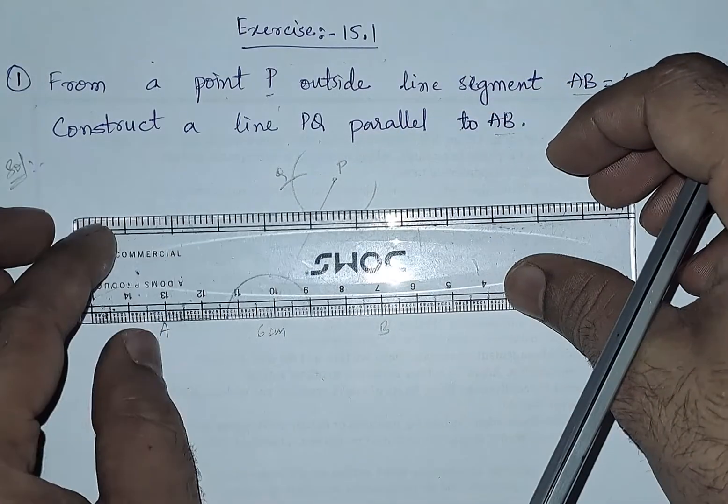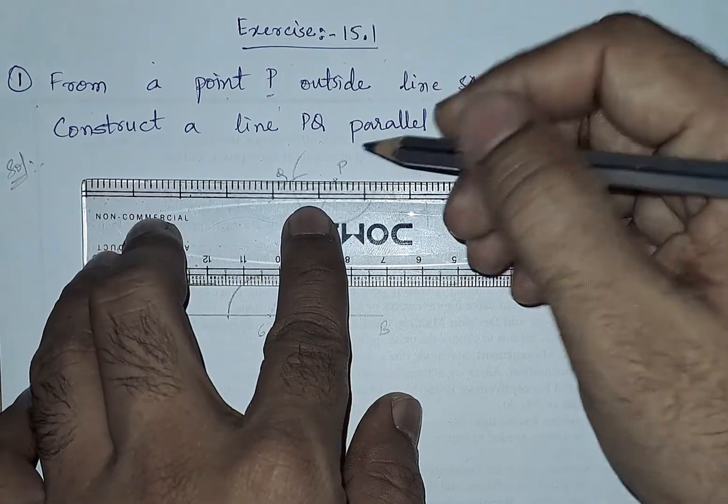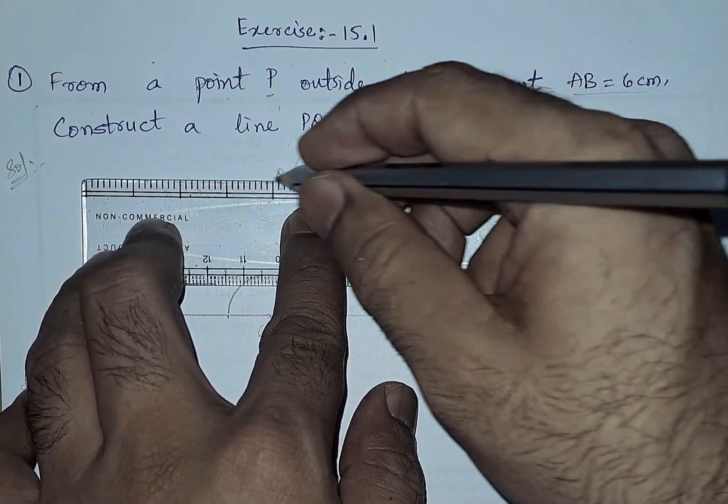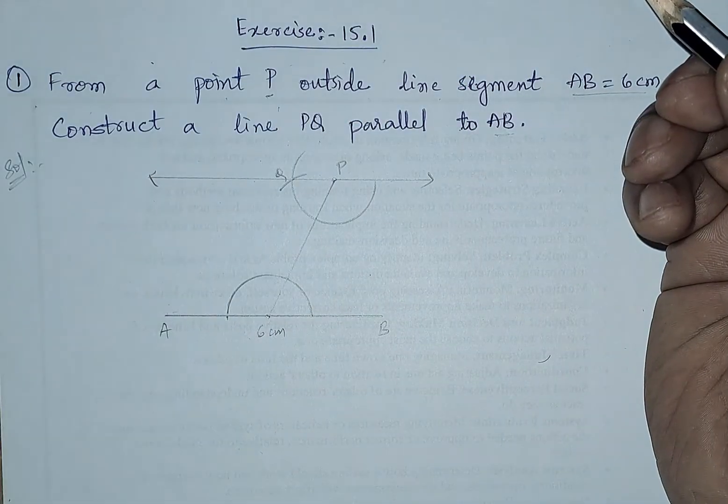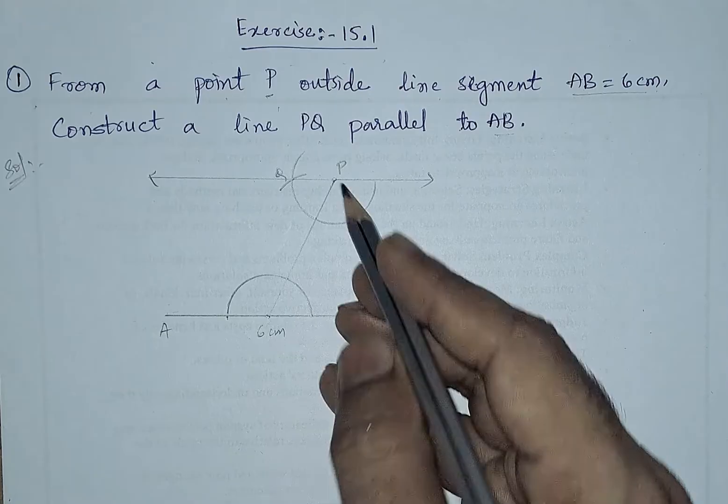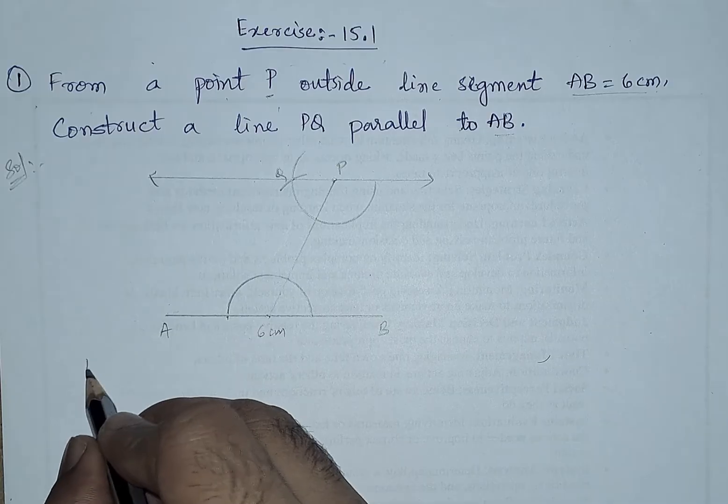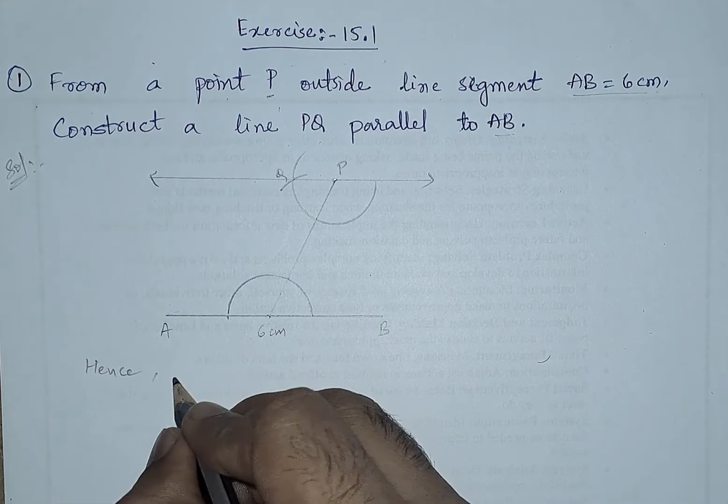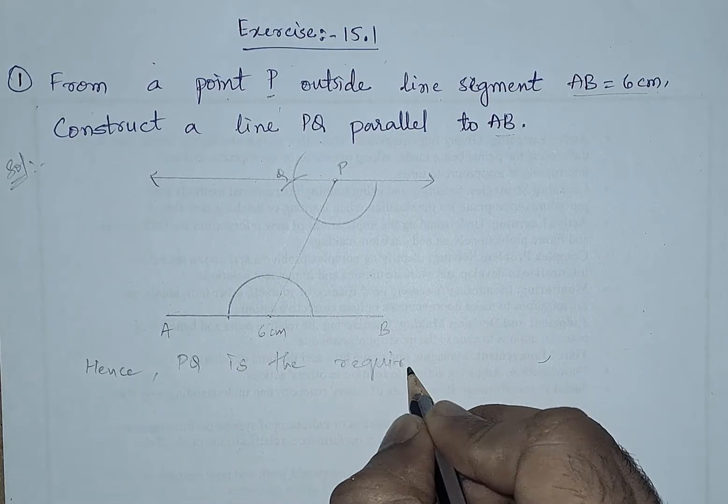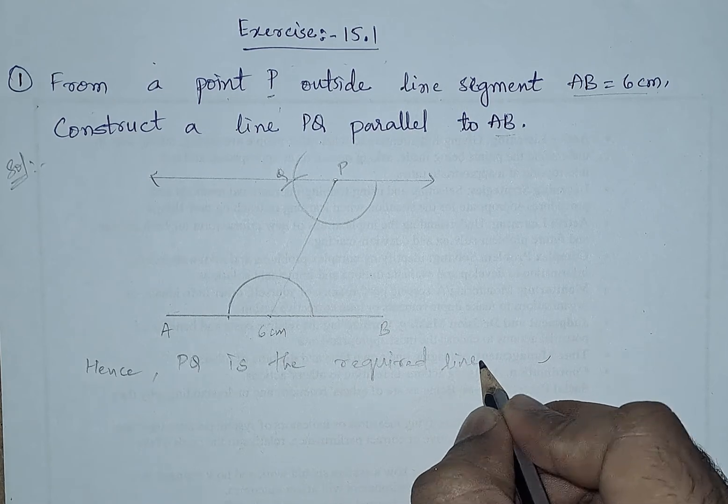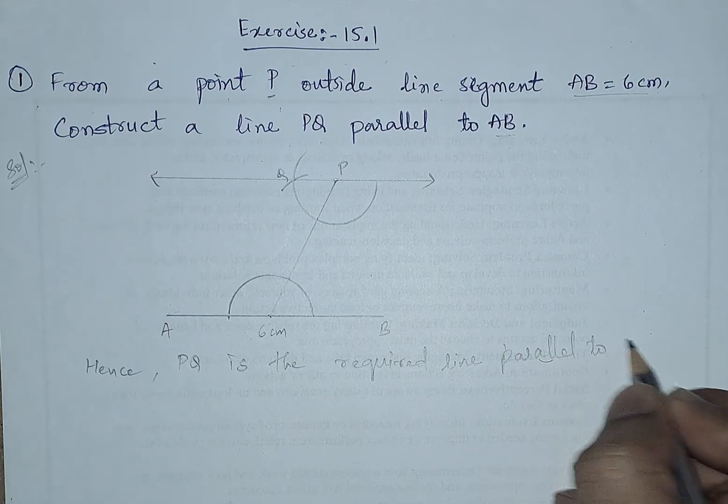Now we will join these two points to form a parallel line. So the line PQ is formed. Line PQ is parallel to AB. We can write, hence PQ is the required line parallel to AB.